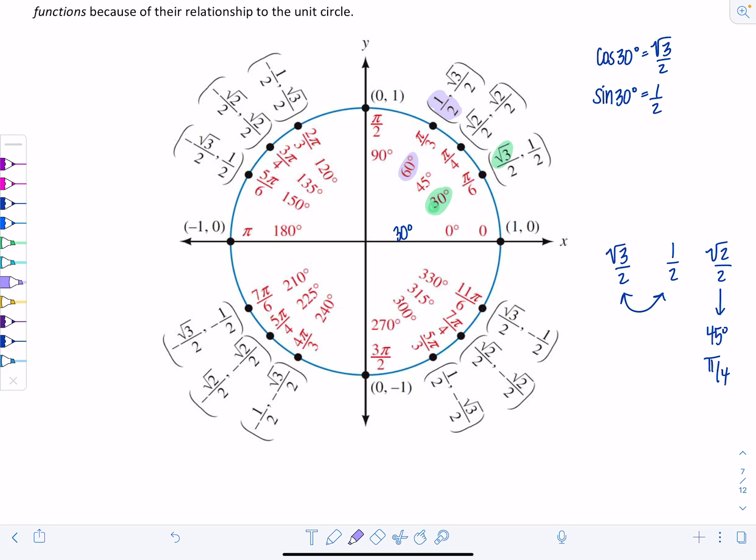Other people like thinking of the numbers getting smaller. You have 3, 2, 1. Rad 3, rad 2, rad 1 is still 1. So it's going from big to small. The other numerators go the other way: rad 1, rad 2, rad 3. Then divide all of them by 2.